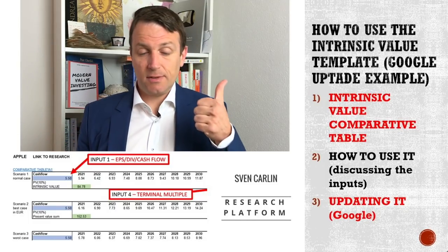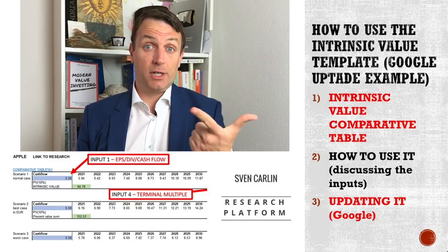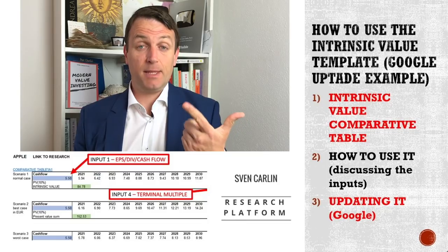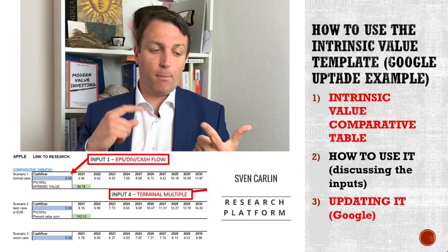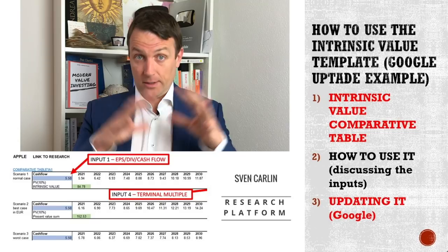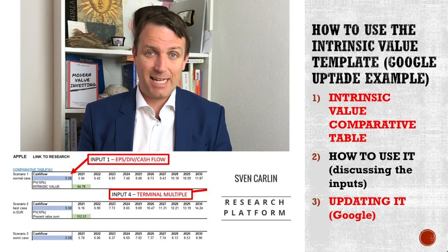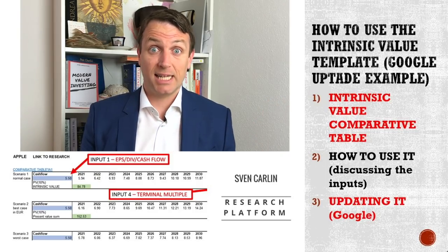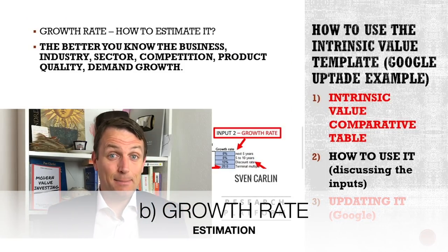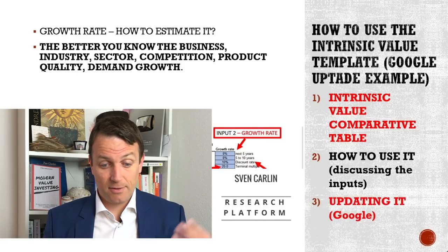An important point: if you use per share data like dividend or earnings per share, then you compare to the price. If you use net income or cash flow for the whole company from the financial statement — not per share — then you compare it to the market capitalization. The second input is the growth rate, and a lot of questions have arrived on how to estimate it.